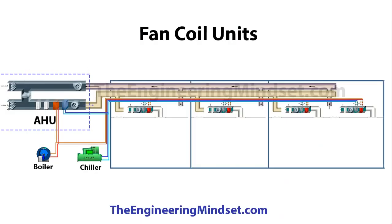The main AHU supplying all the fresh air for the building does not necessarily need additional heating and cooling coils — it could just be 100% fresh air being pushed in and out, with perhaps just filters on the supply. You would still have connections to chillers and boilers feeding the fan coil units, unless cooling is supplied by a refrigeration unit and heating is electric.